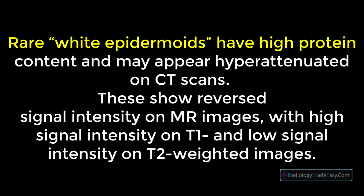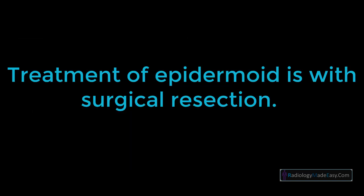Rare 'white epidermoids' have high protein content and may appear hyperattenuated on CT scans. These show reversed signal intensity on MR images, with high signal intensity on T1 and low signal intensity on T2 weighted images. Treatment of epidermoid cysts is with surgical resection.